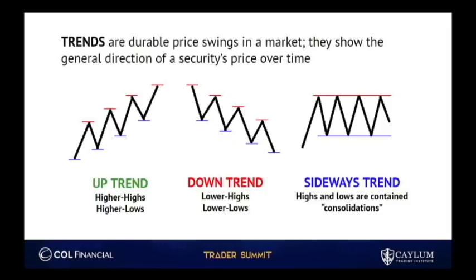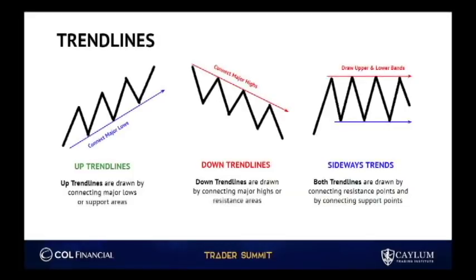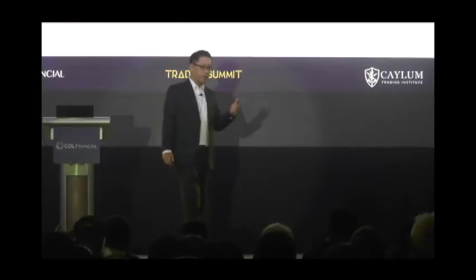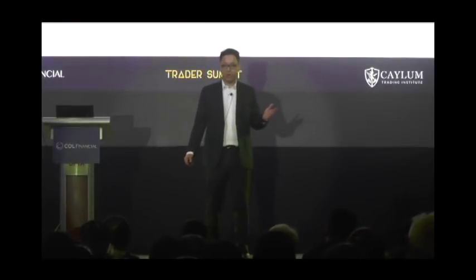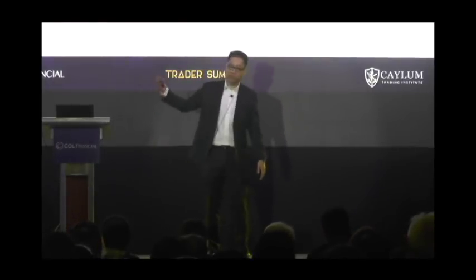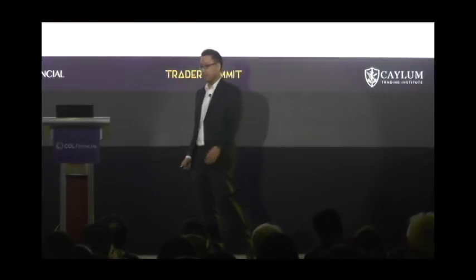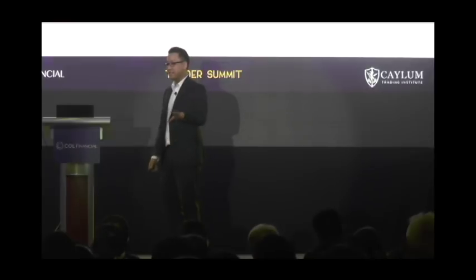In order for us to do this, we need to use this tool — it's called trend lines. You notice on this slide, you see the blue line that's going up and the red line that's going down? Those are trend lines. When you have trend lines, you want to see whether or not the overall share prices are going up, going down, or just going sideways. It's not as simple as it actually looks.